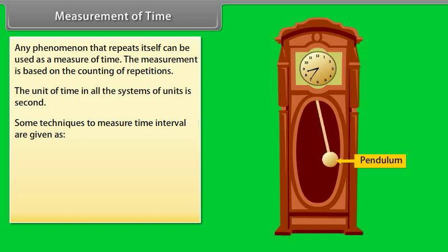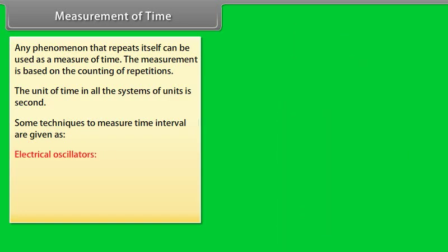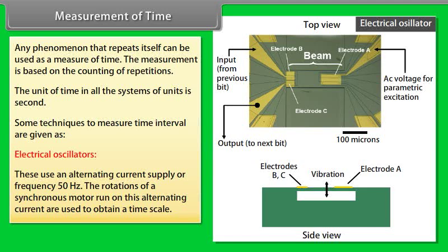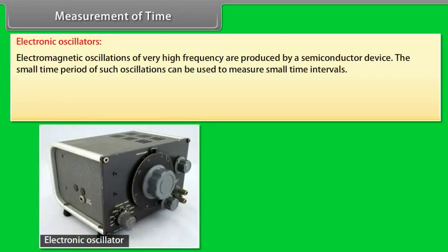Electrical oscillators: These use an alternating current supply of frequency 50 hertz. The rotations of a synchronous motor run on this alternating current are used to obtain a time scale. Electronic oscillators: Electromagnetic oscillations of very high frequency are produced by a semiconductor device. The small time period of such oscillations can be used to measure small time intervals.